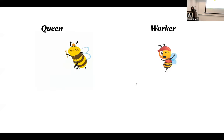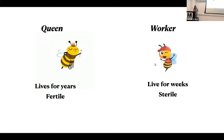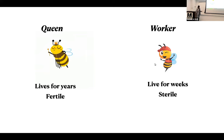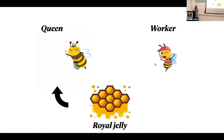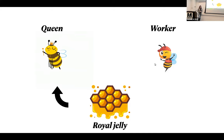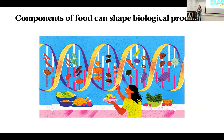Queen bees live for years and are fertile — her fertility is so potent she gives birth to the entirety of the hive. Worker bees, on the other hand, only live for weeks and are sterile. What you might not know is that worker and queen bees are genetically identical life forms shaped into two different organisms by the food they eat. During development, the queen eats royal jelly as a larva while worker bees eat pollen. The components of royal jelly essentially reprogram the queen larva's DNA to turn it into the anatomy and physiology of the queen.